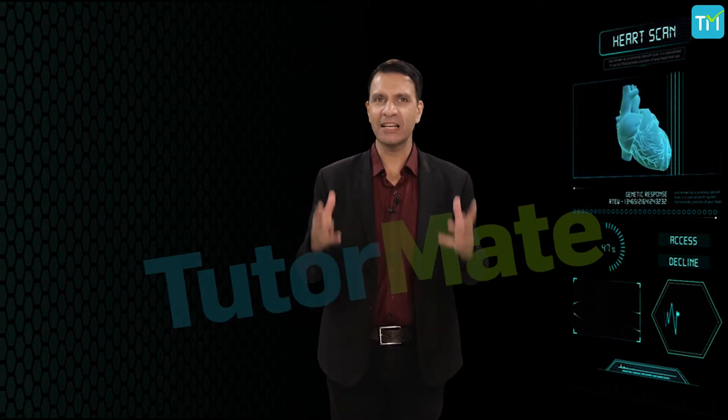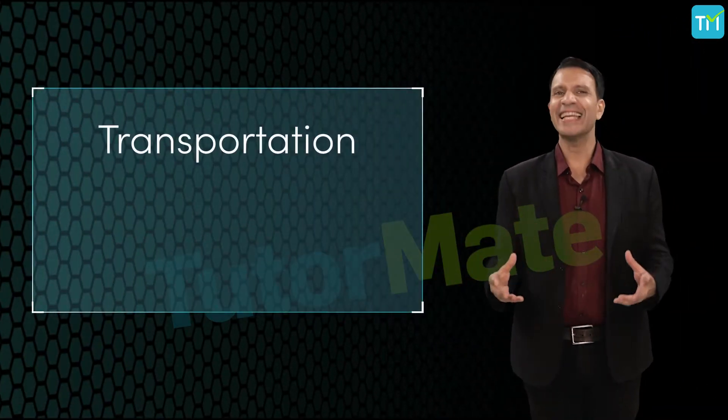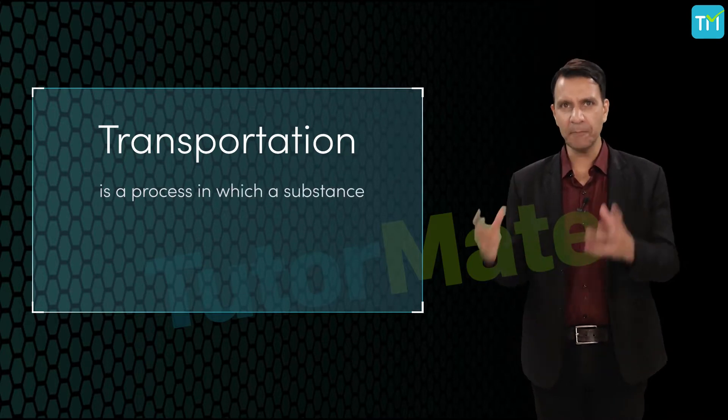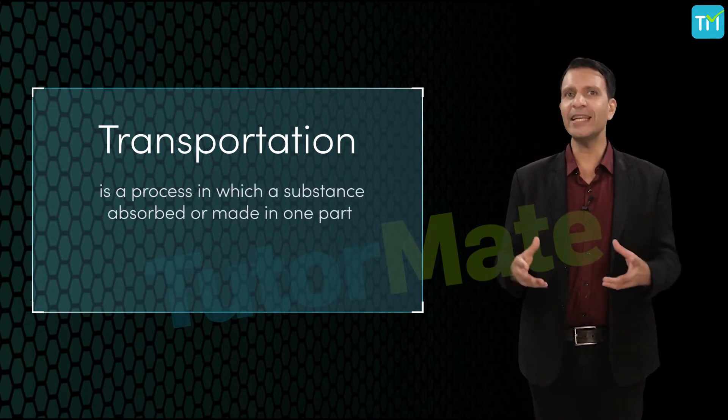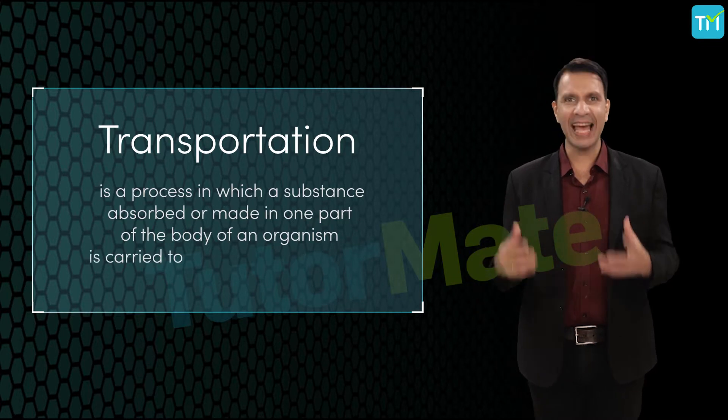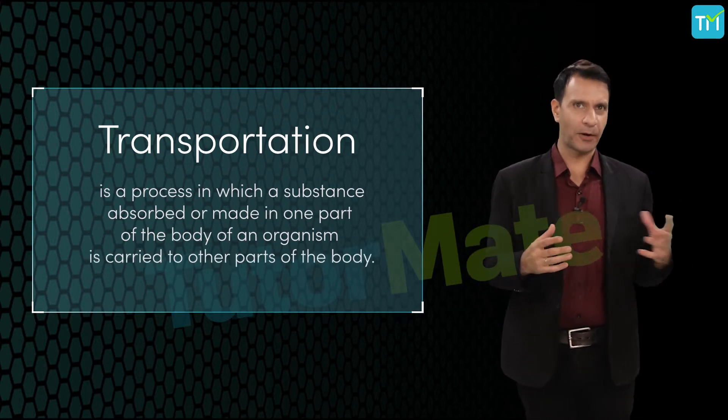It's simple. The substances that our body needs, for example, food, oxygen, water, are things that we need for performing basic functions. So there are special tissues and organs which are assigned the task of carrying these essential substances from one region of the body and transport them to several other parts. So transportation is the process in which a substance absorbed or made in one part of the body of an organism is carried to other parts of the body.